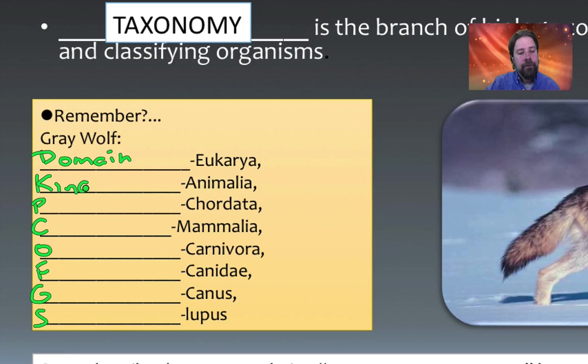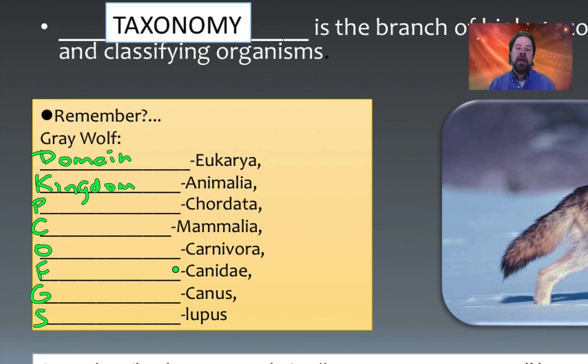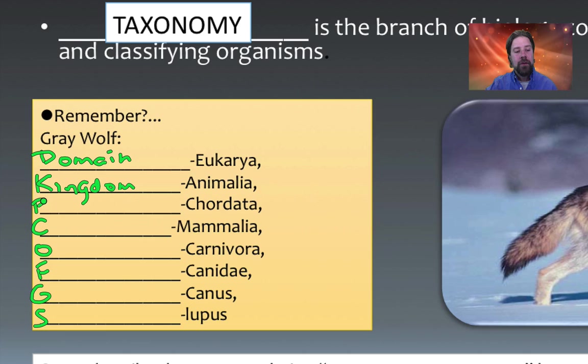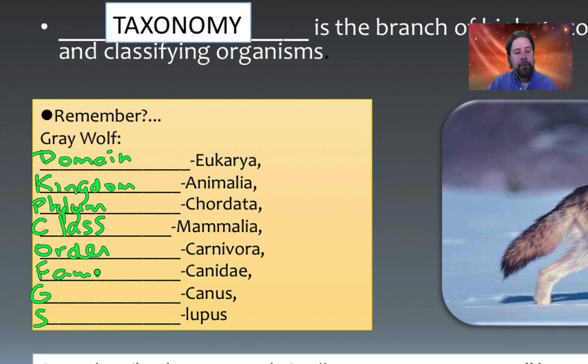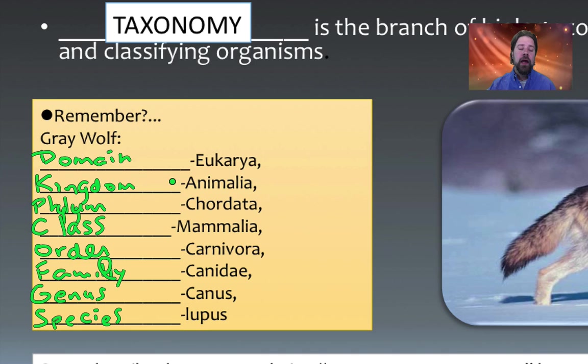With Kingdom, we've changed the old five-kingdom system. We took away the kingdom status of protists because newly discovered DNA and RNA sequences show they're actually closer to plants, animals, and fungi than they are to each other. So after Kingdom we have Phylum, Class, Order, Family, Genus, and Species. For the gray wolf: Domain Eukarya, Kingdom Animalia, Phylum Chordata, Class Mammalia, Order Carnivora, Family Canidae, Genus Canis, Species lupus.